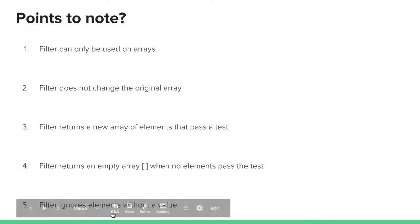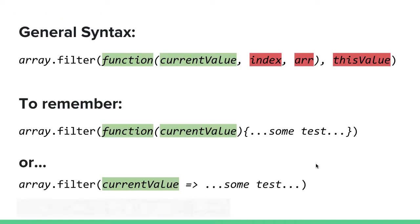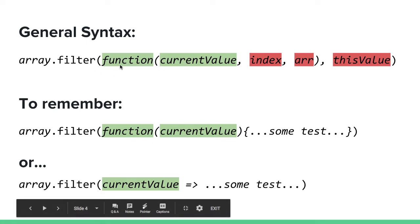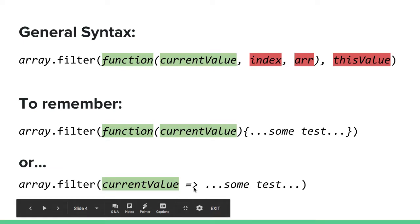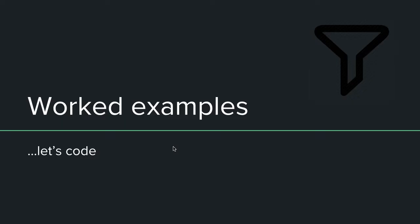It also ignores elements without a value. So this is the general syntax — everything in green is required and everything in red is optional. Today we're going to focus just on the required parts. Filter expects a function taking a current value, which will be the element of the array. We can also use the ES6 arrow function syntax to make it look neater. So let's do some examples.